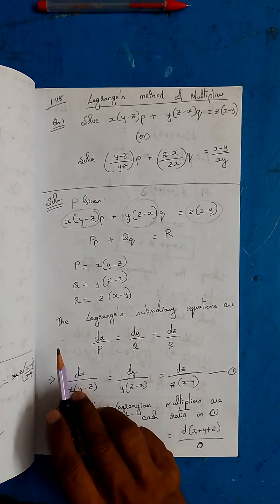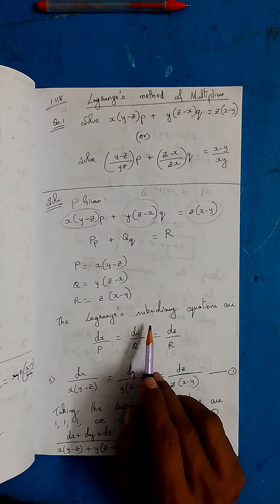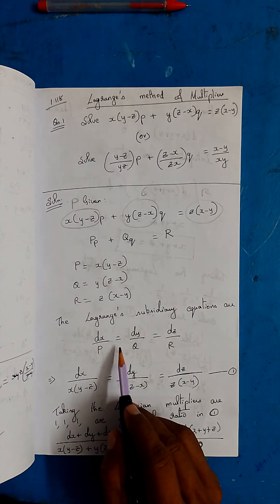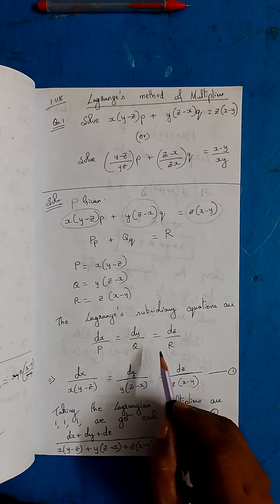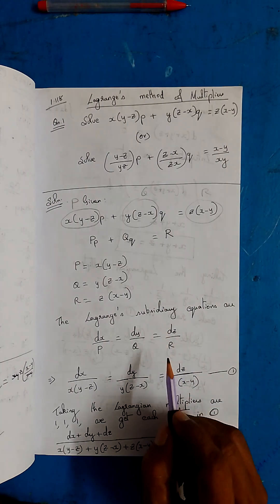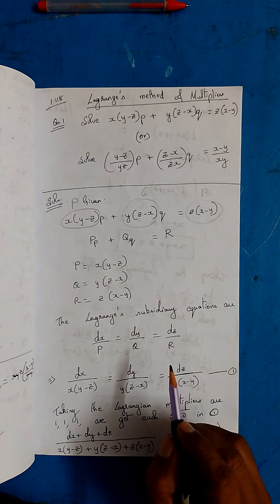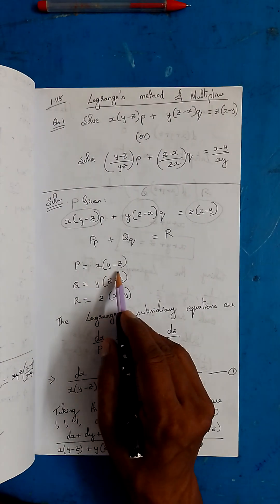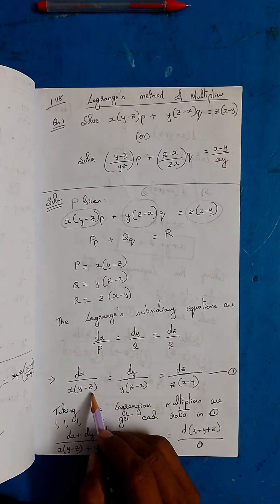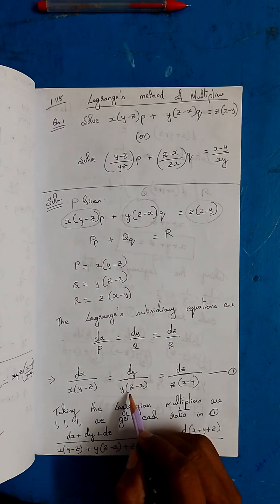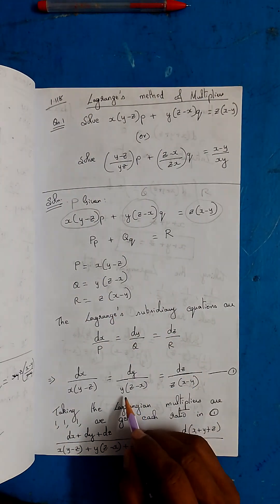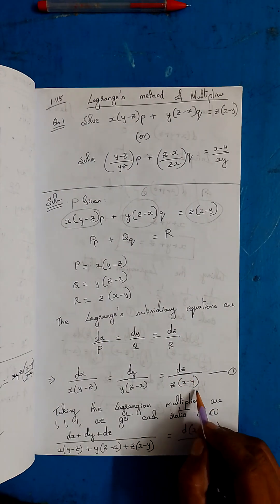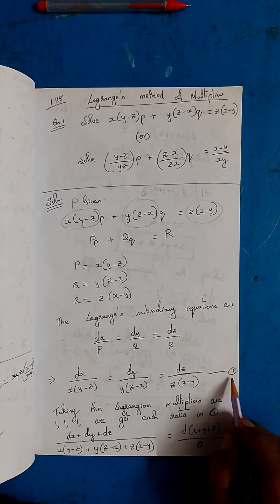We frame Lagrange's subsidiary equations: dx/P = dy/Q = dz/R, that is dx/[x(y−z)] = dy/[y(z−x)] = dz/[z(x−y)]. This is equation 1.